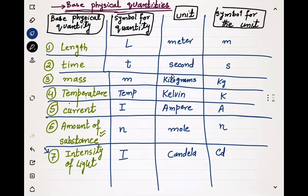These are called base quantities because all quantities in physics can be constructed using these seven quantities. They are like the alphabets or ingredients of the whole of physics — every single quantity in physics can be broken down into these base quantities. The next class will be about the derivation of base units of other quantities.